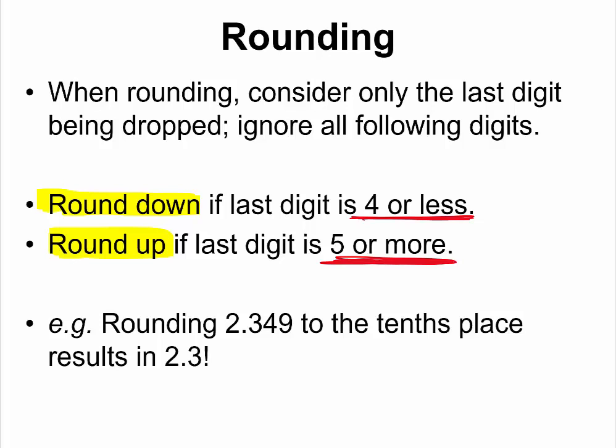For example, if you have a question like this: round 2.349 to the tenths place. The tenths place means the 3 should be the last digit. Since this is the last number to be considered, we only look at the number behind it. In this case, it is 4, so we round down — we throw the rest out — and that gives us 2.3.